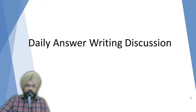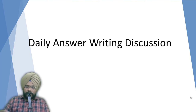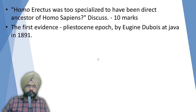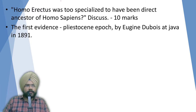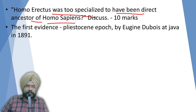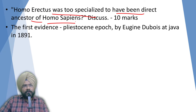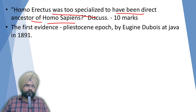Welcome to the daily answer writing discussion. This is the third question: 'Homo erectus was too specialized to have been the direct ancestor of Homo sapiens - discuss.' This was a 10-mark question, and no one has properly addressed this question; everyone has made up their own theory.